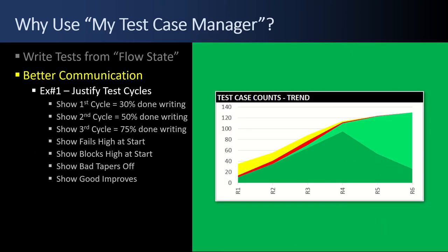Another reason to use MyTestCaseManager is for better communication. Example number one is to justify test cycles. Show that there's a first test cycle with 35 test cases and you're ultimately going to end up with 130. Show there's a second and third test cycle. Show that you're writing test cases as you get more functionality each sprint and as you get builds with more functionality and as you have time. Show how you're writing some cases, cutting a test cycle to run and execute those test cases. Justify that test cycles are important — testing is never one and done.